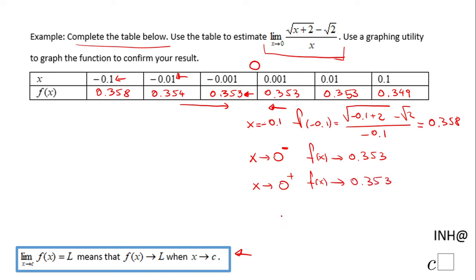So that means the limit when x approaches 0 of this function is 0.353. Of course, if you want to get the exact value, probably you should use an algebraic way.